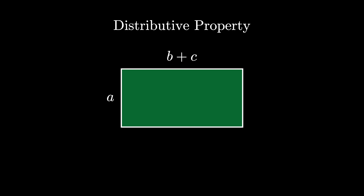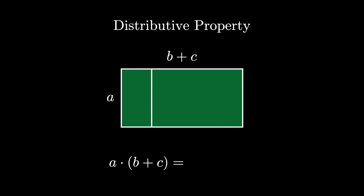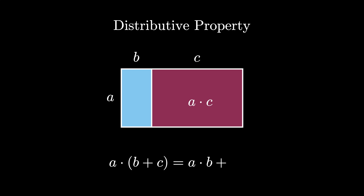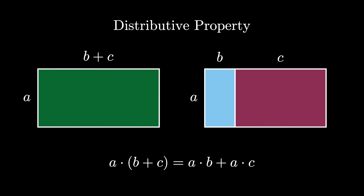The arithmetic idea can be extended to an algebraic one by using an A by (B plus C) rectangle, where A, B, and C represent numbers. We can compute the area in two ways: the first yields A times the quantity B plus C, and if we decompose into A by B and A by C rectangles, the area is AB plus AC. Therefore, A times the quantity B plus C equals AB plus AC — this is the distributive property, and many algebraic rules come from using it over and over.